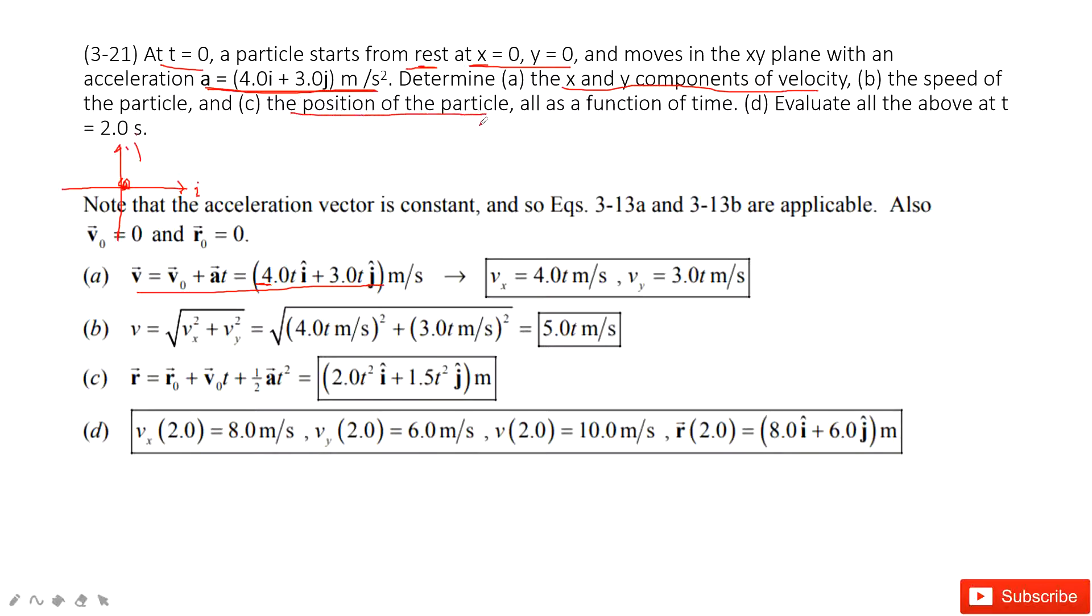Now find the position of the particle. We consider this equation: the final position equals initial position plus velocity times t and one half a t squared. We just need to pay attention to all these quantities.